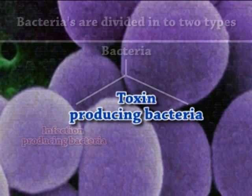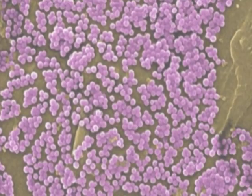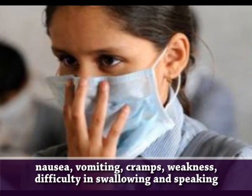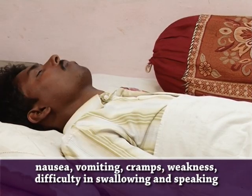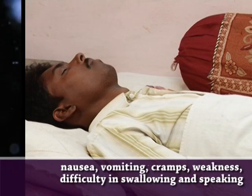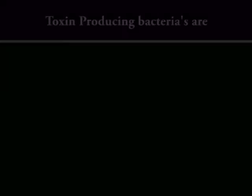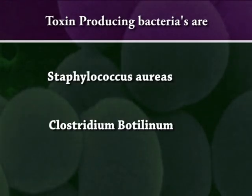Toxin-producing bacteria themselves will not make you ill, but rather the toxin they produce while growing on food or in your stomach will cause a poisoning or intoxication-type illness. Symptoms may include nausea, vomiting, cramps, weakness, and difficulty swallowing and speaking. The incubation period is short — possibly just a few hours. Examples include Staphylococcus aureus and Clostridium botulinum.